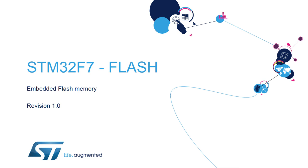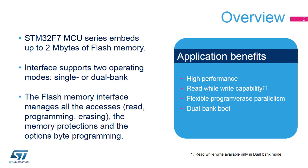Welcome to this presentation of the STM32 Flash Memory Interface. It covers all the new features of the STM32F7 Flash Memory. STM32F7 microcontrollers embed up to 2MB of Flash Memory. The Flash Memory Interface manages all memory access — read, programming, and erasing — as well as memory protection and option bytes. Applications using this Flash Memory Interface benefit from its high performance together with low power access.